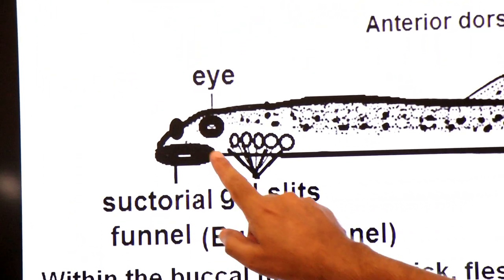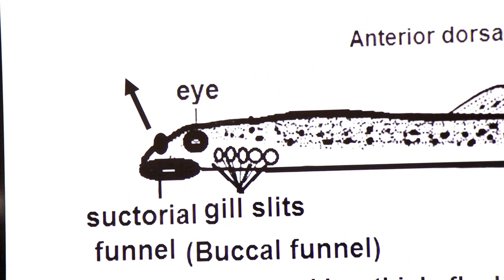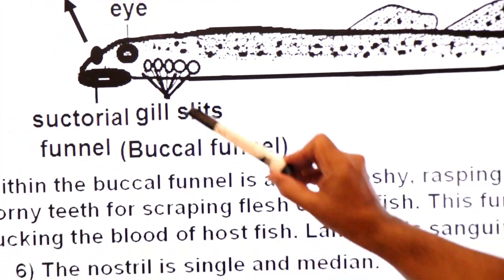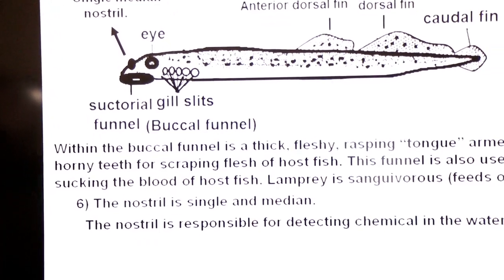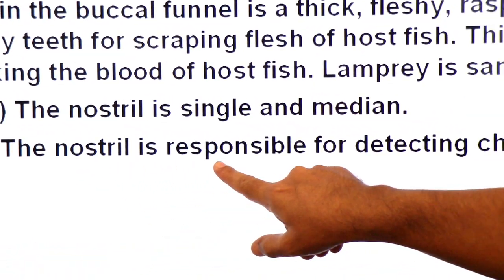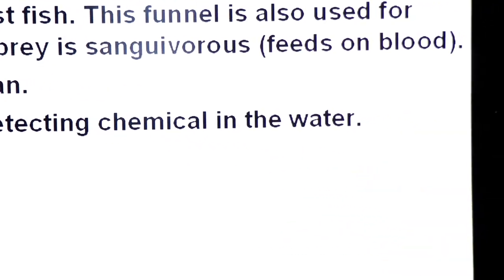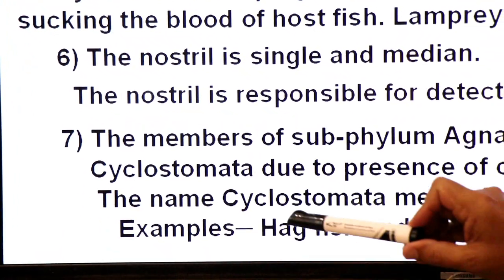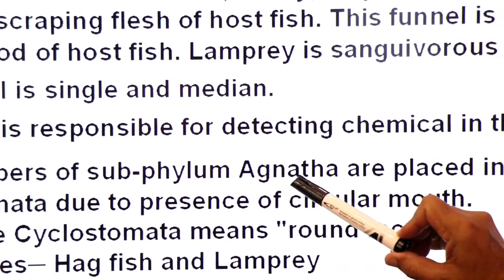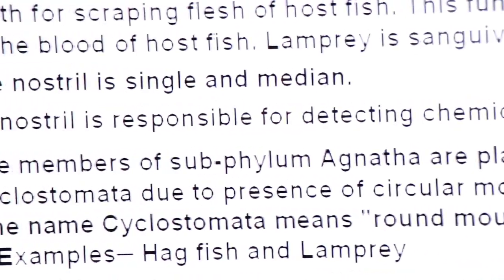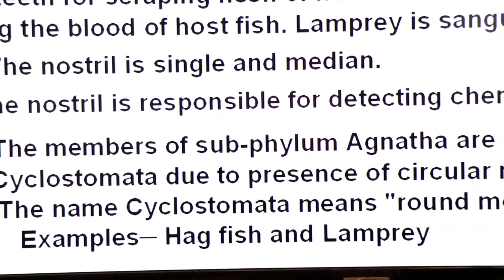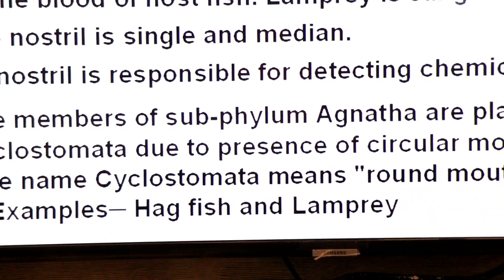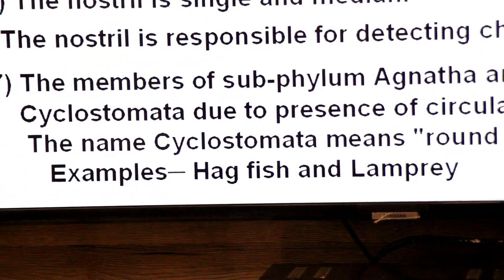In Agnatha, nostrils are also present. The nostril is single and median. In the diagram, this rounded structure is the single median nostril. The function of the single median nostril is to detect chemicals in water. Due to the presence of a circular mouth, the members of subphylum Agnatha are placed in superclass Cyclostomata — 'cyclostomata' means round mouth. Examples include hagfish and lamprey.